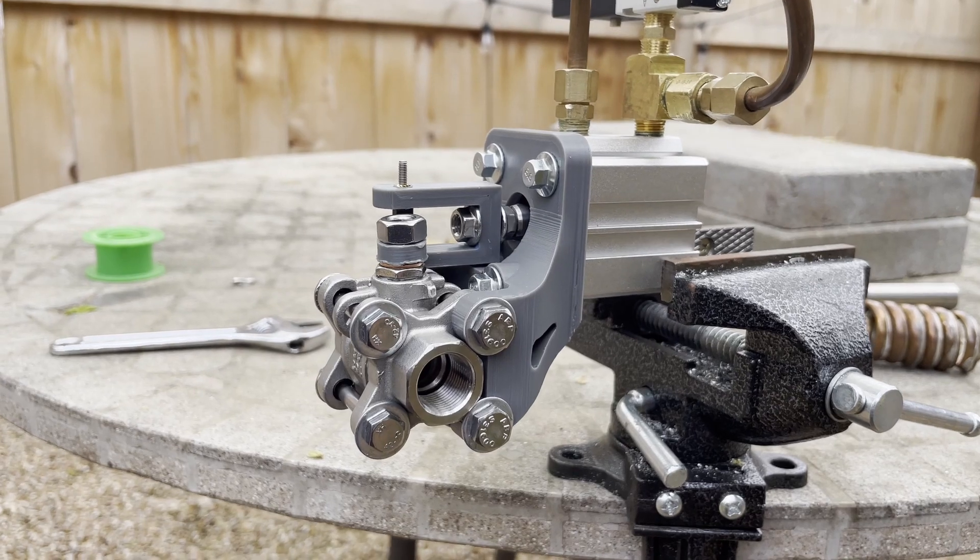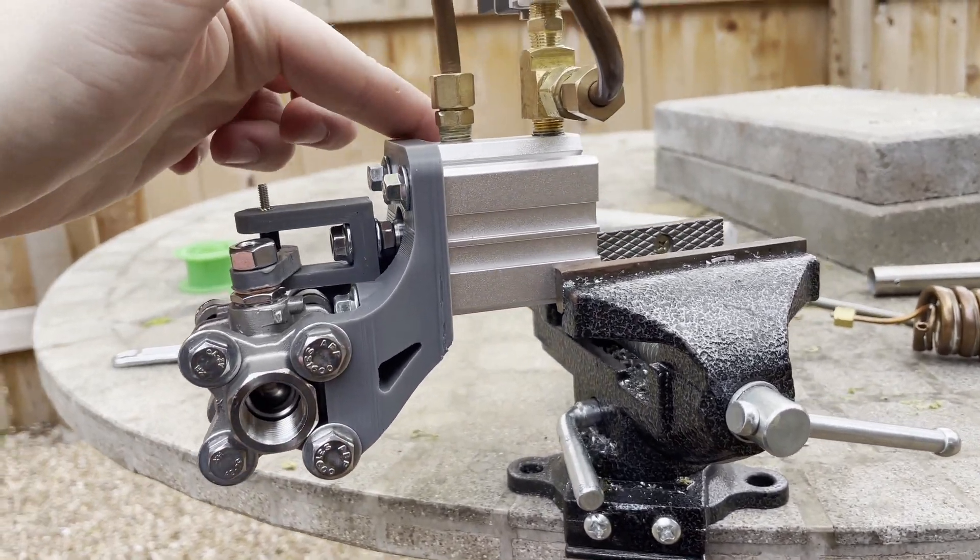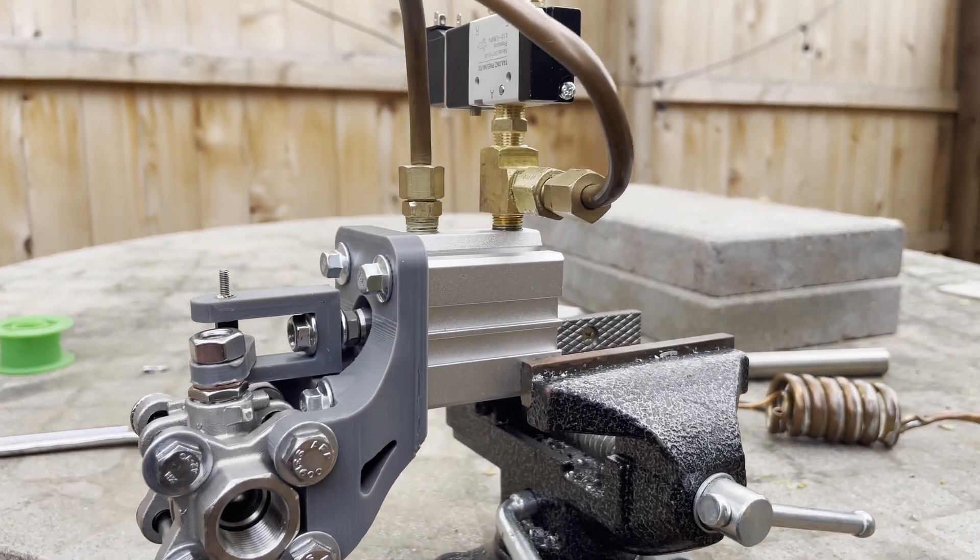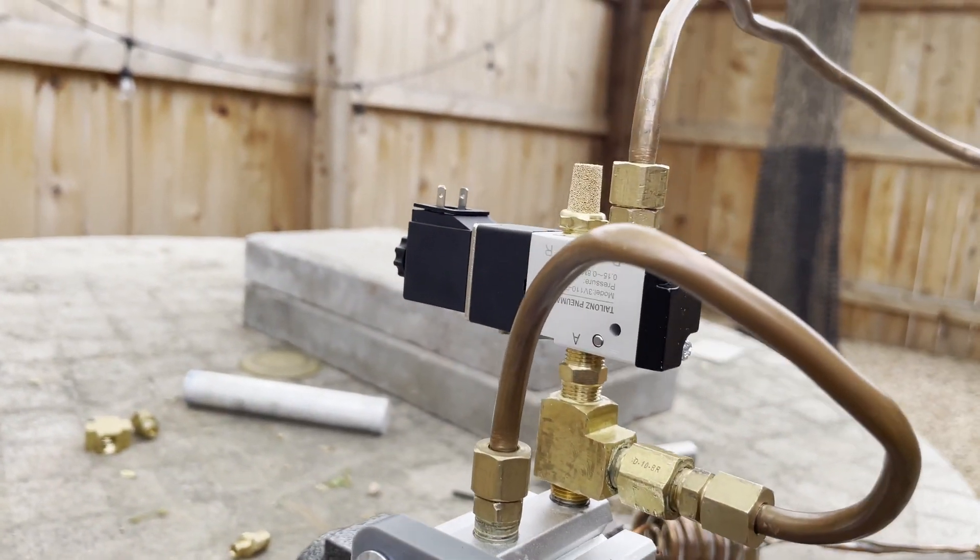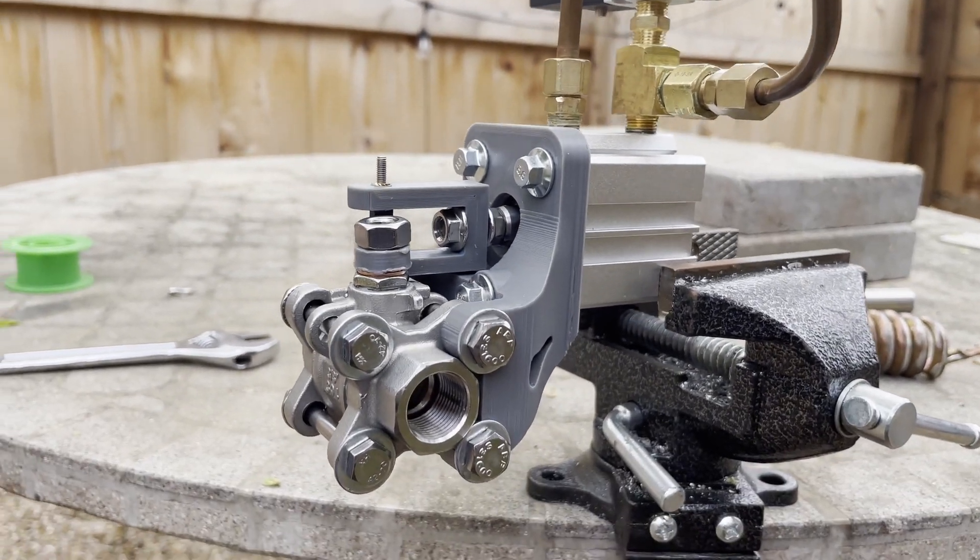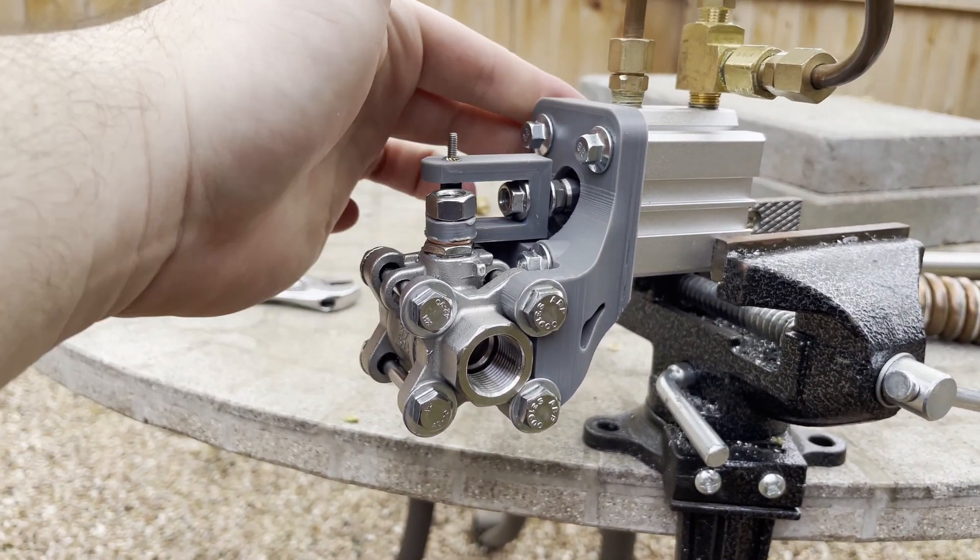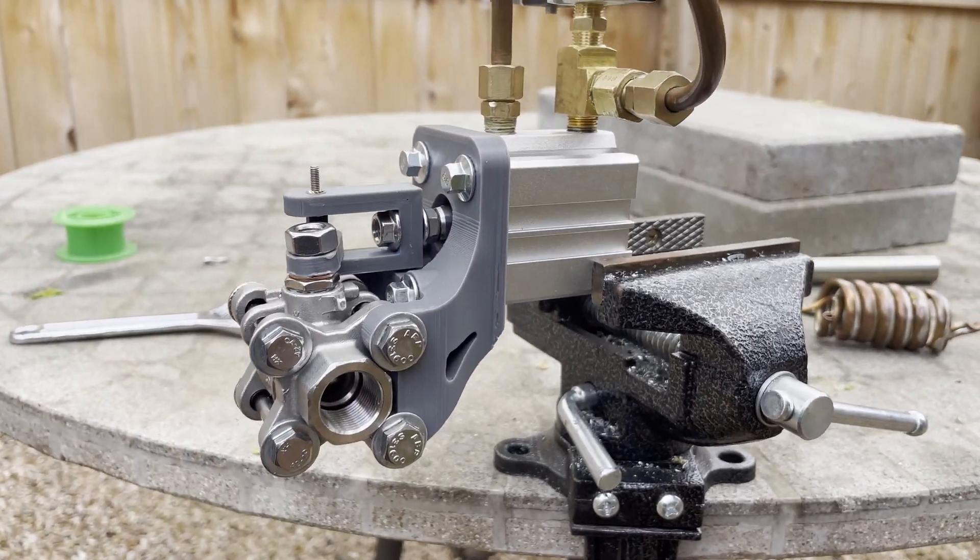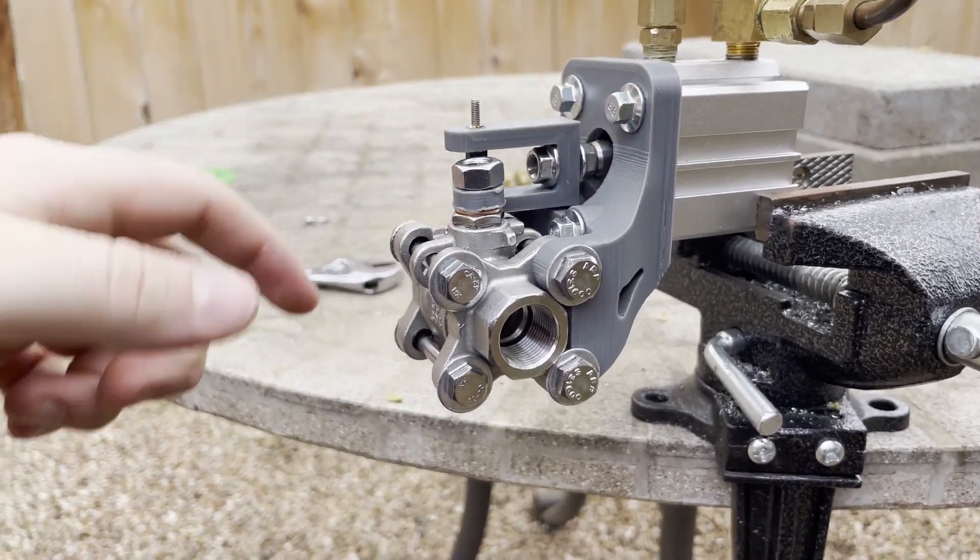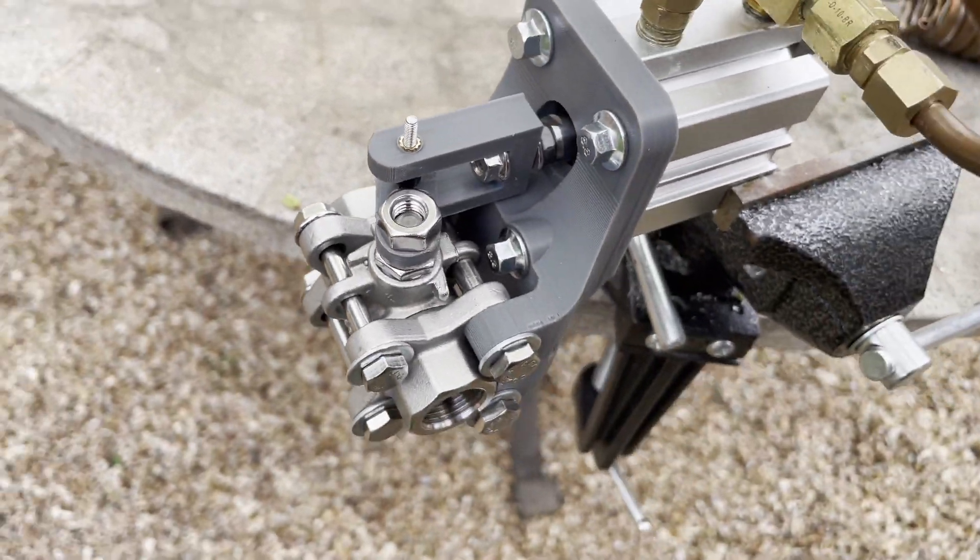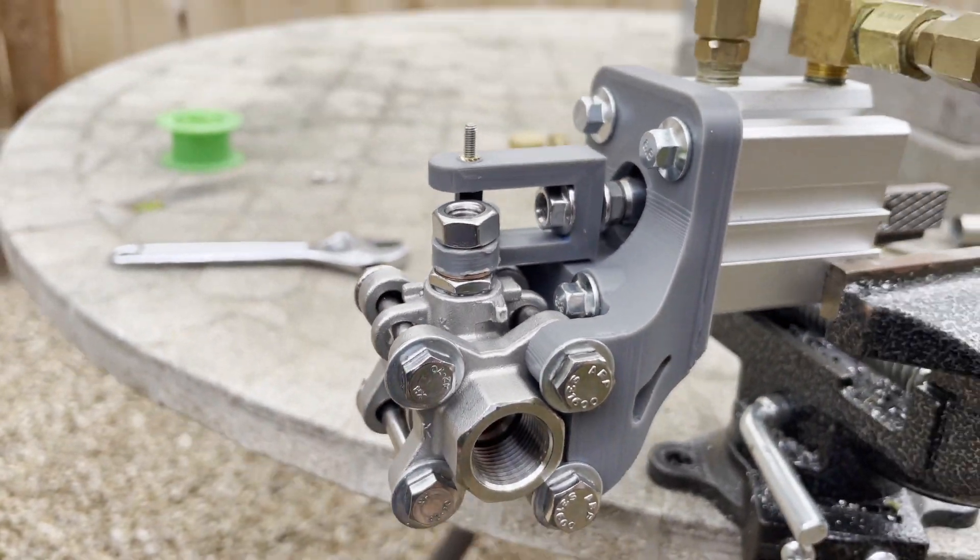This is an air piston, similar price from Amazon, and this is a three-way pilot valve. Everything else is 3D printed custom design. Basically what this air piston's gonna do is once I pressurize the back end, it's going to extend and turn the shaft and open the ball valve.